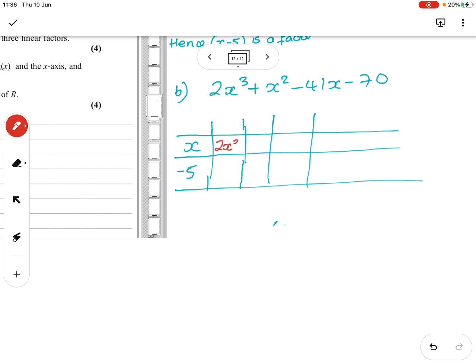So we want to get 2x³. If we want to get 2x³, we must have multiplied this by 2x², and if that was the case, this would be -10x². We've got our 2x³. We want to have just 1x², which means this has got to be +11x², which means I would have multiplied by 11x, which means I would have got -55x down here. We've got +1x².